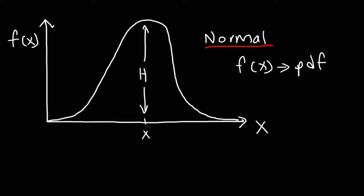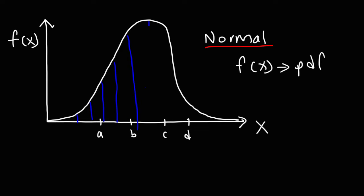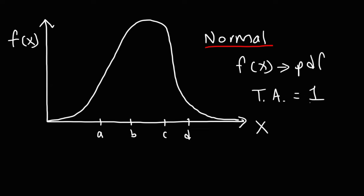f of x gives us the distance between those two points. Let's label some points: A, B, C, and D — we'll use those shortly. One important thing to mention is that the total area under the curve for a continuous probability distribution is always equal to 1. So the area of the shaded region highlighted in blue equals 1 — the total area is 1.